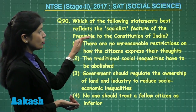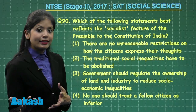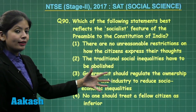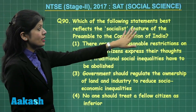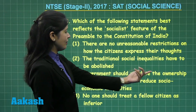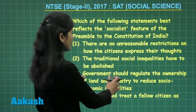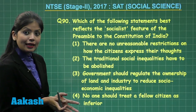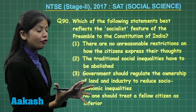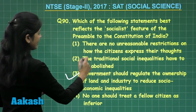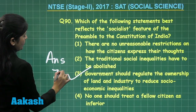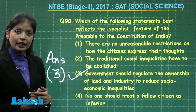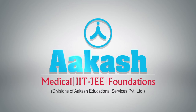As opposed to the capitalist framework, I need to identify which statement best denotes the socialist feature. Statement three says the government should regulate the ownership of land and industry to reduce socio-economic inequalities. The role of government is central to socialism in order to reduce socio-economic disparities. Therefore, the correct answer to this question is option three, where the government regulates ownership of land to reduce socio-economic inequalities.